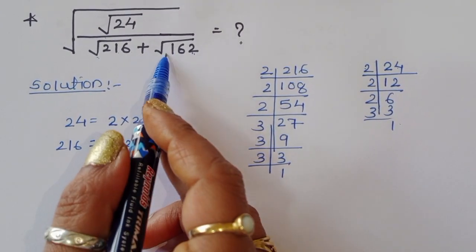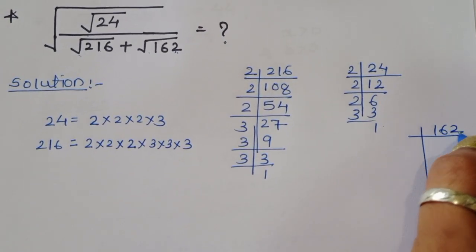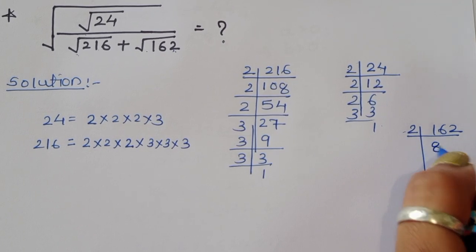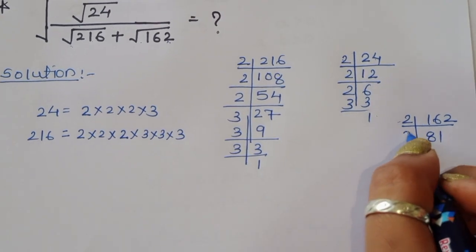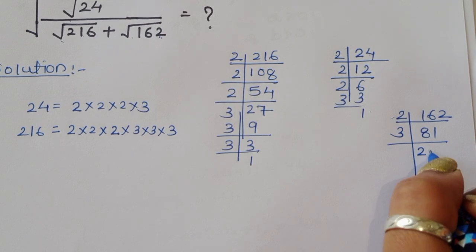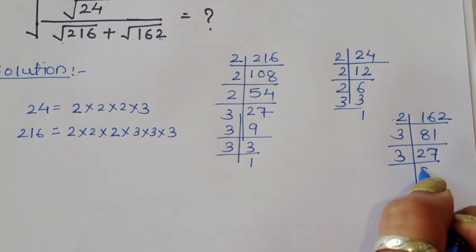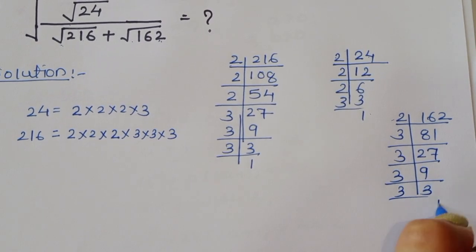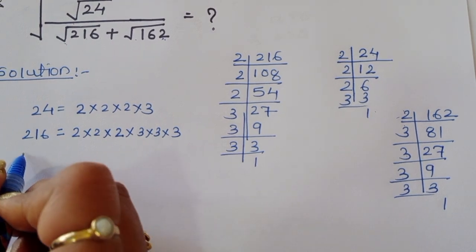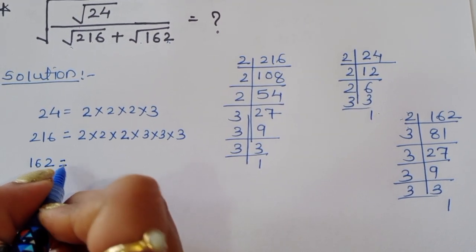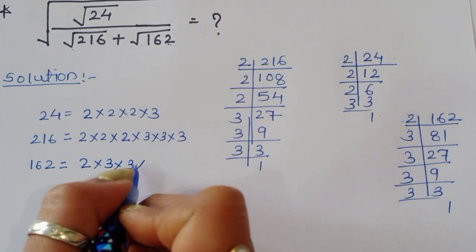Next is 162. Taking the prime factorization of 162, we get 2 times 3 times 3 times 3 times 3. So the factor of 162 is equal to 2 times 3⁴.